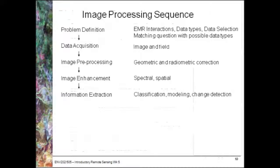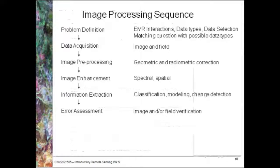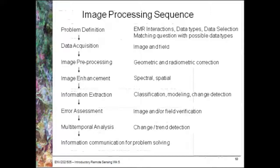We then look at information extraction, which enables us to create classification maps — for example, looking at benthic habitats or modelling the amount of vegetation in an area based on a percentage — and also allows us to look at change detection. It's also important to look at error assessment using both image and field verification, giving us an indication of how accurate our maps are. We can also look at multi-temporal analysis and change or trend detection, and finally we need to communicate this information for problem solving.